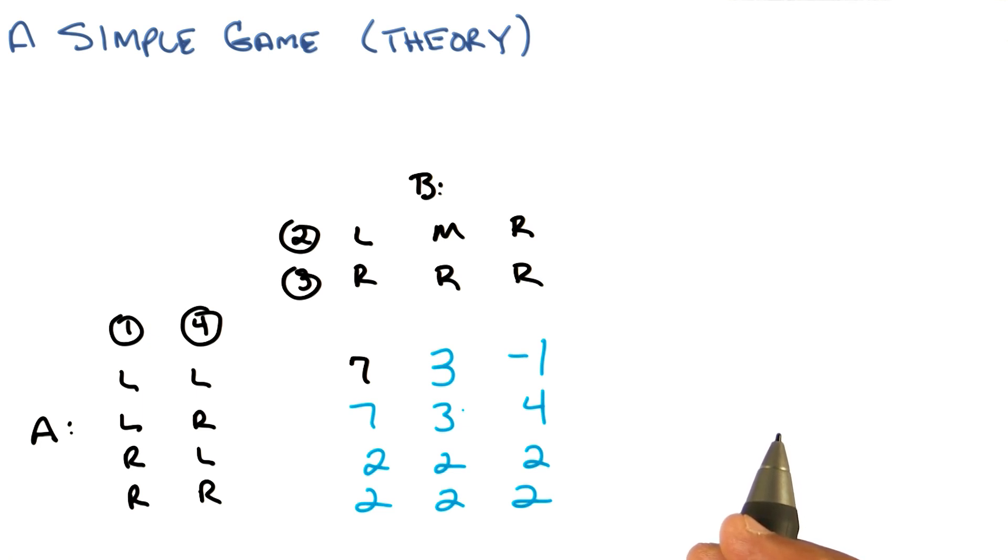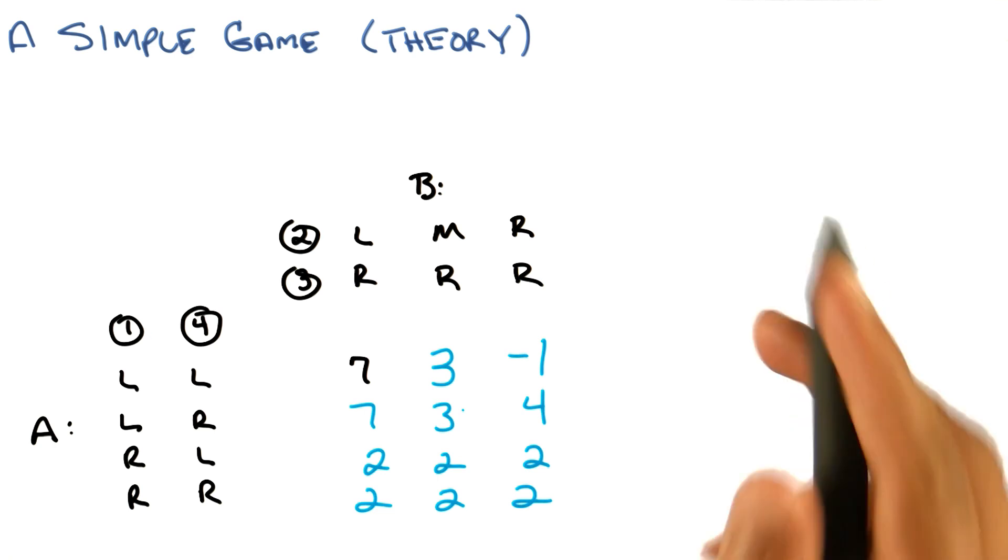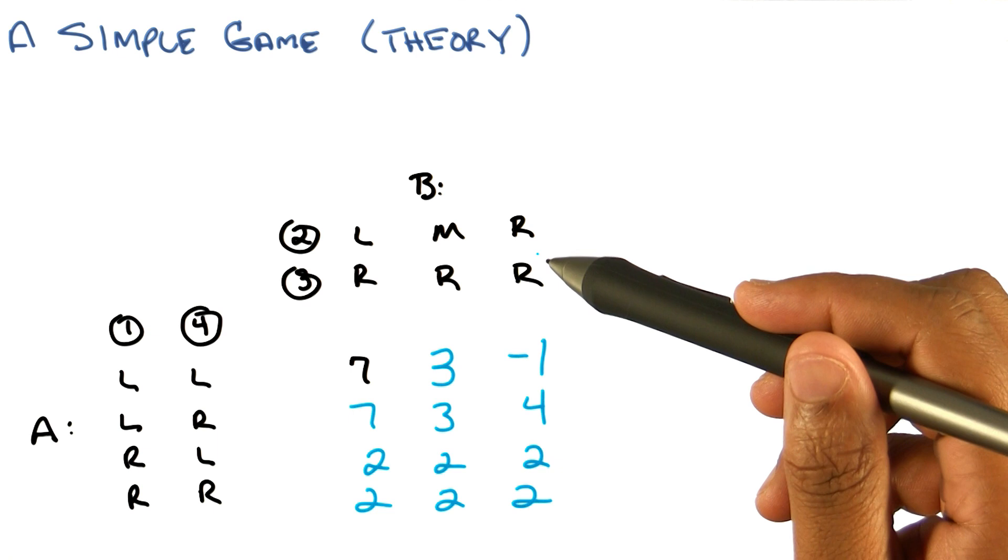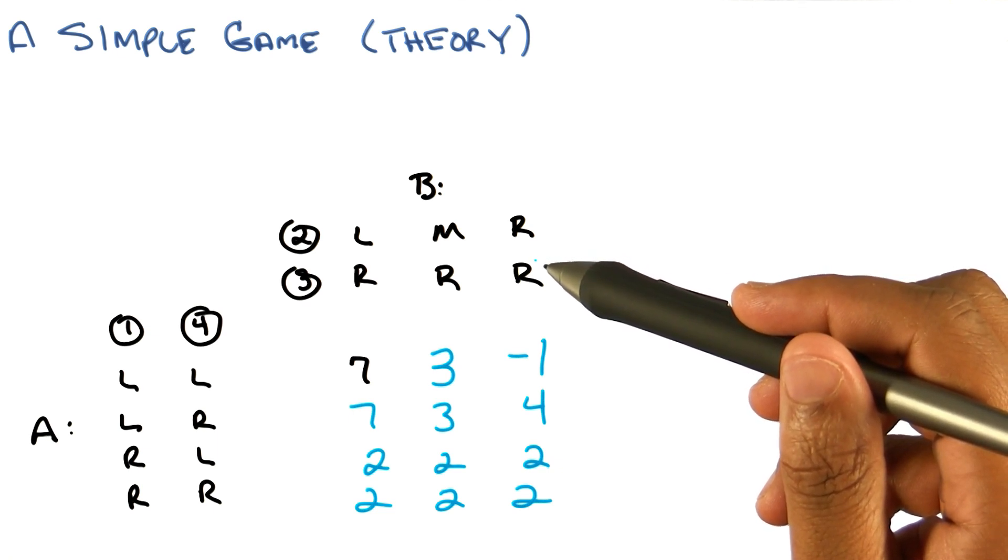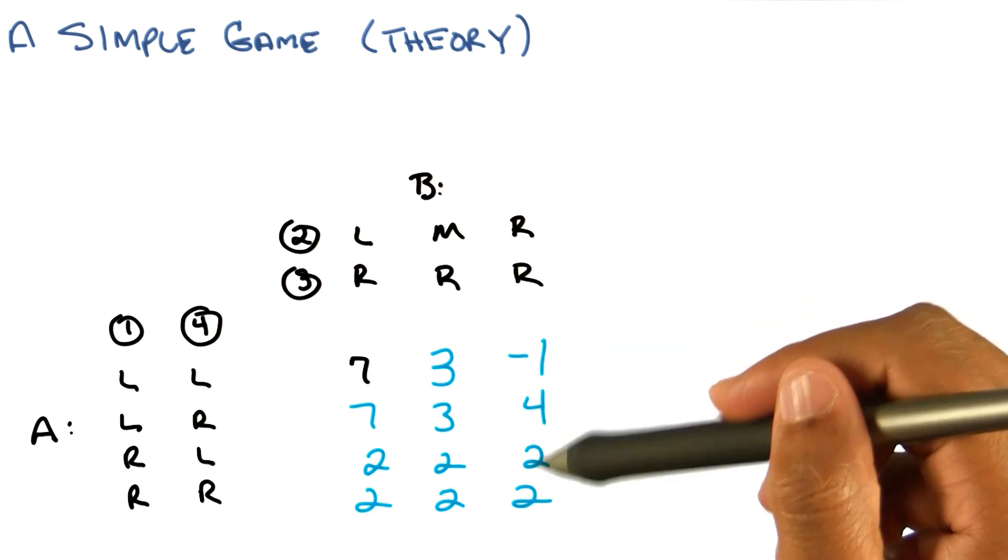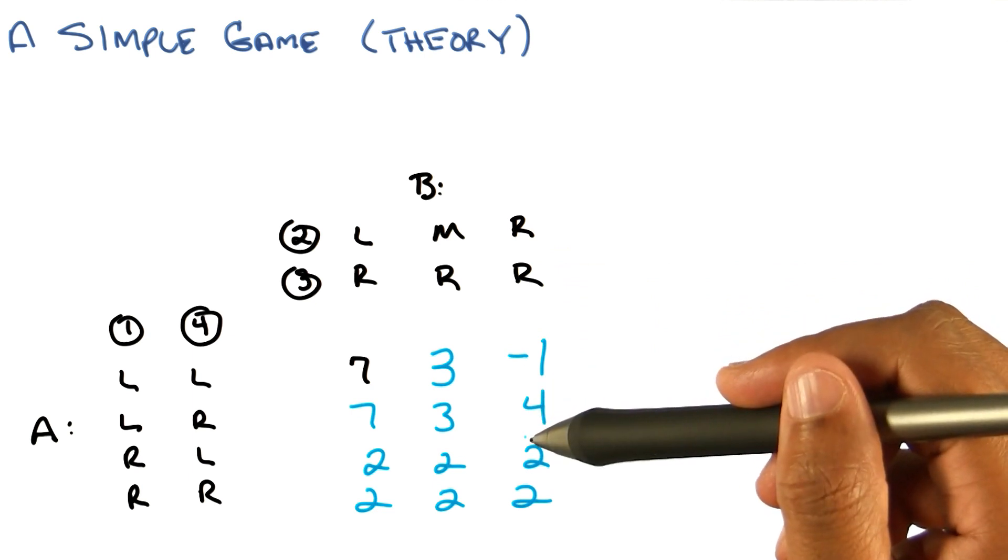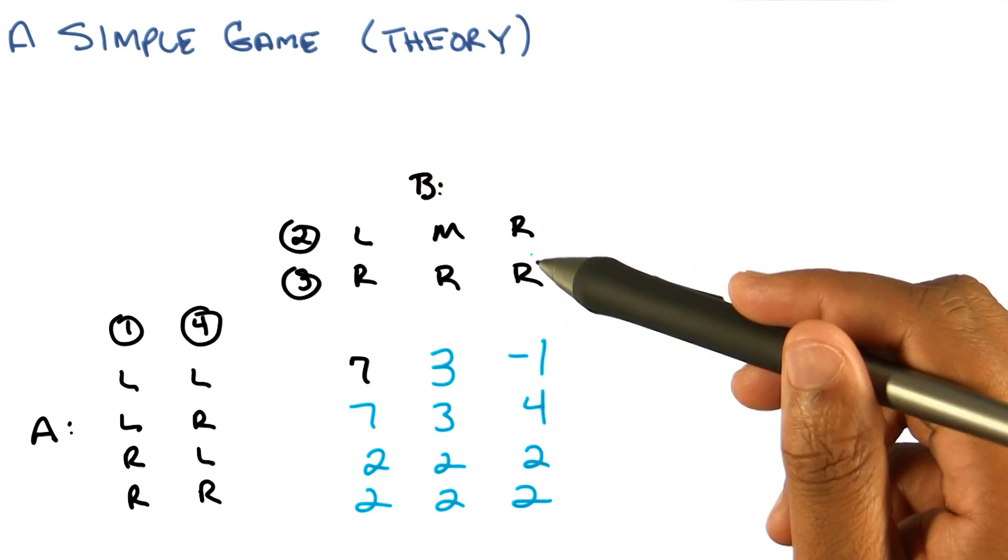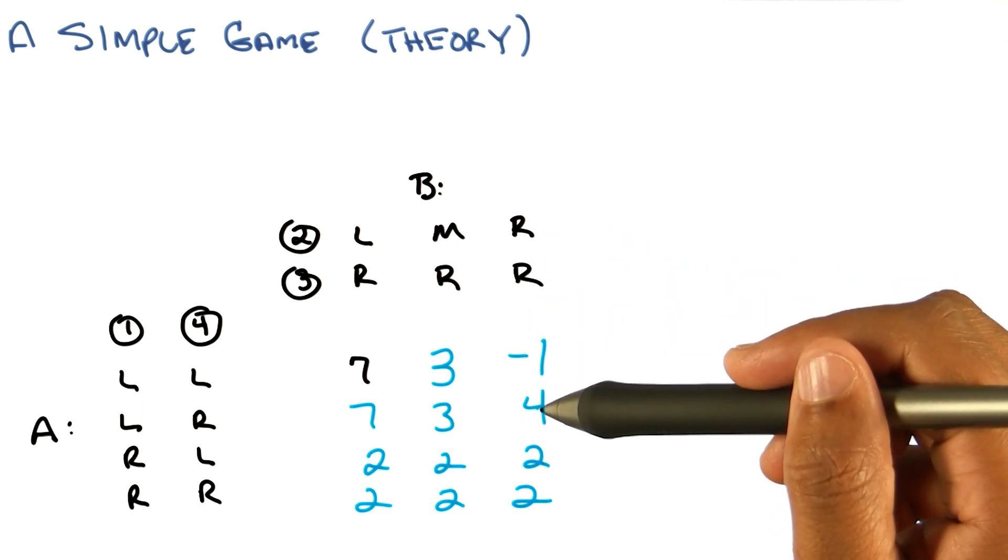So if B chooses first, then B could choose the far right column. Because that's where the minus one is. That's where it's going to be happiest. See, B seems kind of, kind of mean. It's like it's happiest when others are suffering. Well, but A is also happiest when others are suffering. I see. So, so if B chooses that column, then A wants to choose the second row and get the four. Yep.